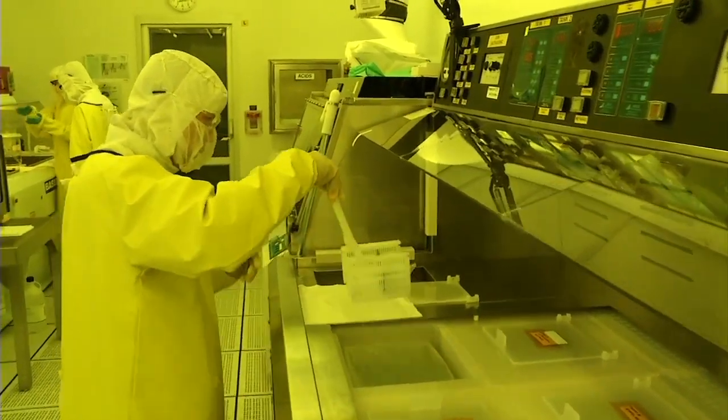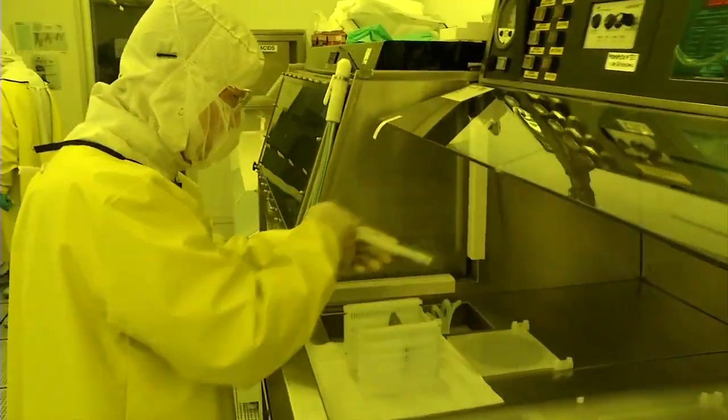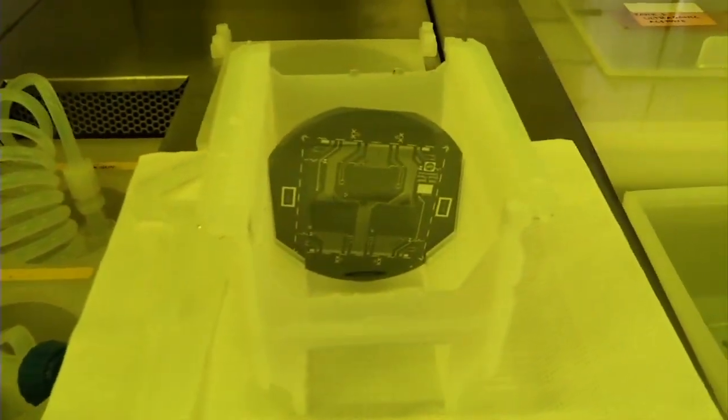After etching, the photoresist mask is stripped off in a solvent and the substrate is ready for deposition of the next layer of material.